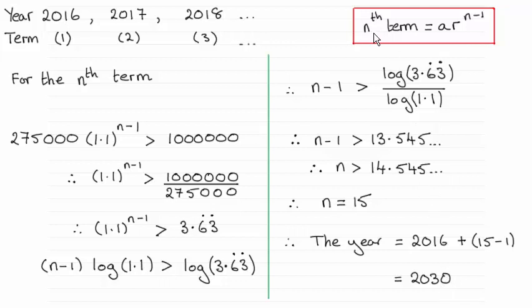You should be familiar with the nth term of geometric progression, which is given by ar to the power n minus 1. What I've done is taken a, the first term 275,000, multiplied it by the common ratio 1.1, and that's raised to the power n minus 1, and it's greater than 1 million.